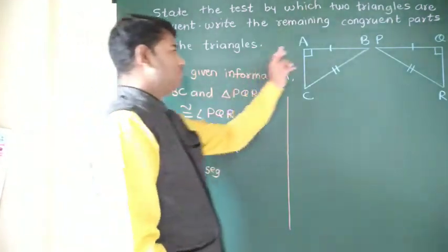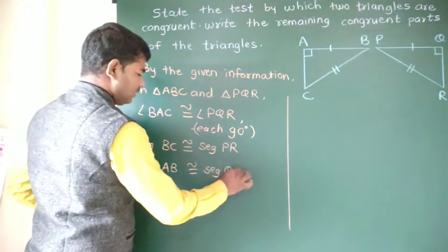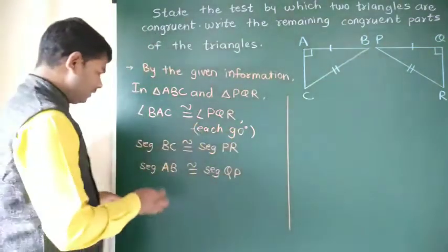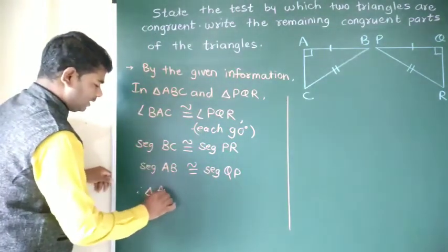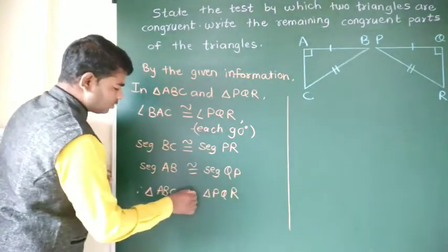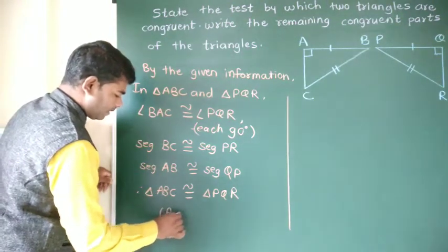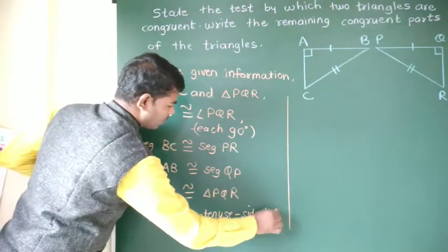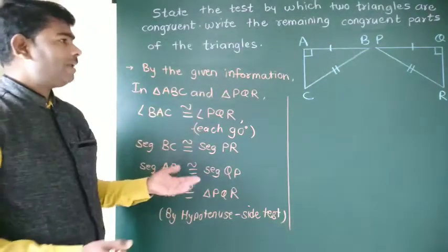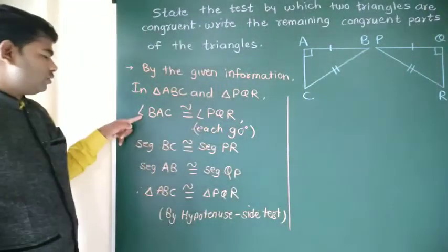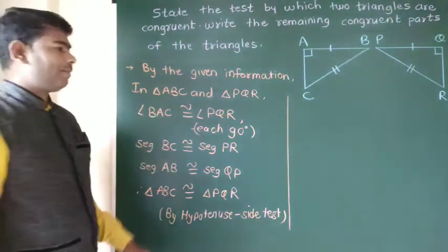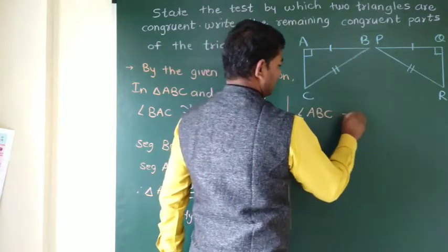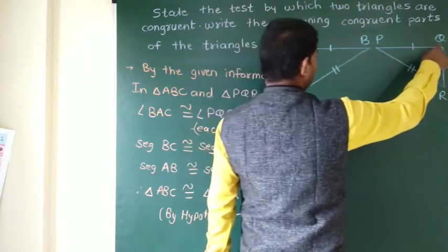So the triangle ABC and triangle PQR are congruent by the hypotenuse-side test. This means triangle ABC and triangle PQR are congruent, and the angle of triangle ABC equals angle QPR.